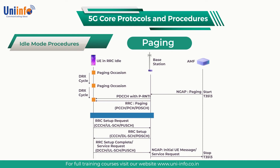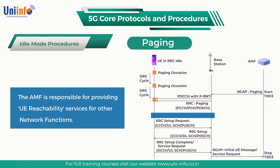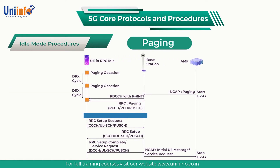The UE determines its paging occasions using a combination of information broadcast in SIB1 and its allocated 5G-S-TMSI. The AMF is responsible for providing UE reachability services for other network functions. For example, an SMS function (SMSF) may have received an SMS addressed to a UE which is registered with the AMF. In that case, the SMSF requests the AMF to initiate the paging procedure before forwarding the message for delivery.